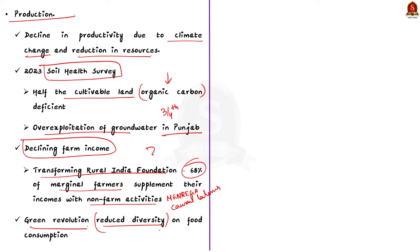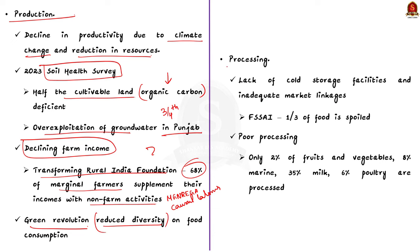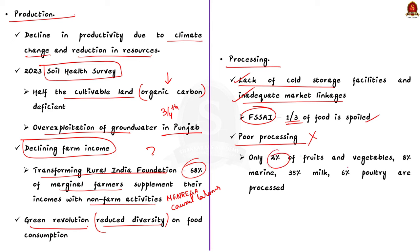Coming to the processing part — you can highlight the lack of cold storage facilities and inadequate market linkages, due to which food wastage has become a big problem. According to FSSAI, one-third of all food in India is wasted or gets spoiled before it is eaten. Even though the government has taken many efforts, food processing remains low — approximately 2% of fruits and vegetables, 8% of marine produce, 35% of milk, and 6% of poultry are processed. These numbers are very low.